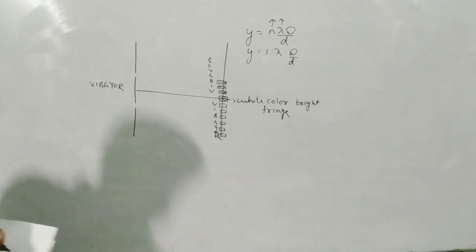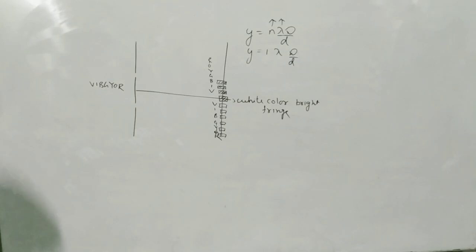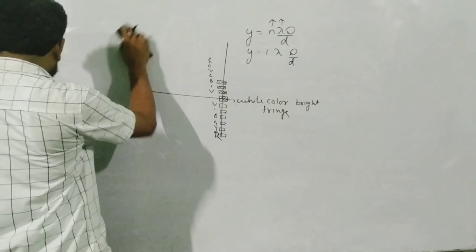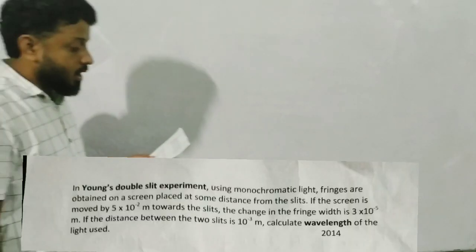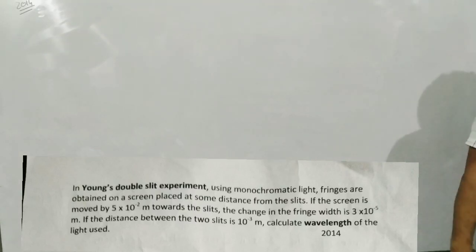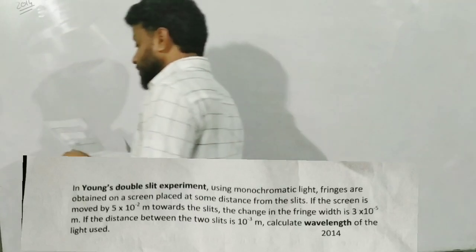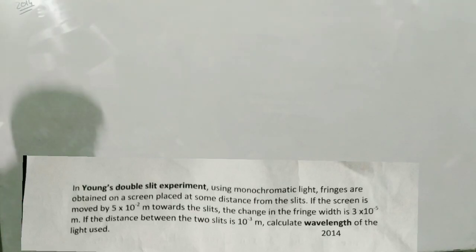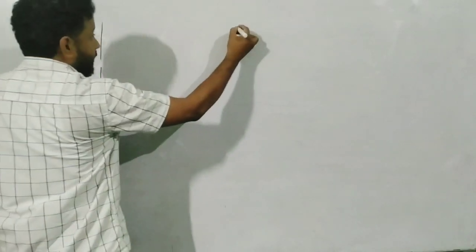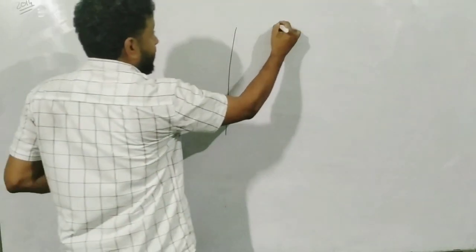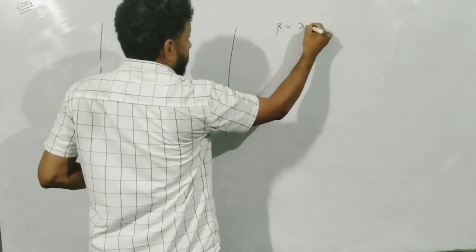So if asked what happens when you use white light: the central bright fringe will be white in color, and there will be a color spectrum of 7 colors starting from violet (closest to center) going to red on either side. Draw this diagram and you will definitely get the answer right.